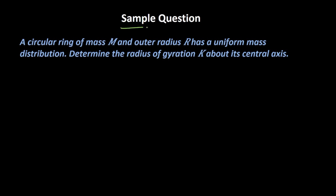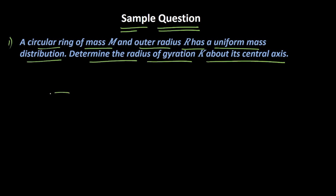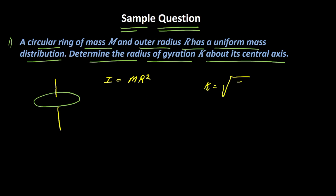Now let's understand this concept with some sample questions. The first question: a circular ring of mass M and outer radius R has a uniform mass distribution — determine the radius of gyration about its central axis. About the central axis, the moment of inertia of a circular ring is I = MR², where M is the mass and R is the outer radius. Using the formula K = √(I / M), we get K = √(MR² / M).